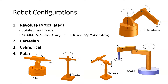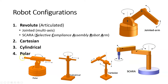There are four main robot configurations. We have the revolute or articulated robot, which includes the jointed multi-axis robot such as the five or six-axis robot, as well as the SCARA robot. SCARA stands for Selective Compliance Assembly Robot Arm. We also have Cartesian robots, which move in X, Y, Z directions; cylindrical robots, which move in a cylindrical path; and polar robots, also known as spherical robots.